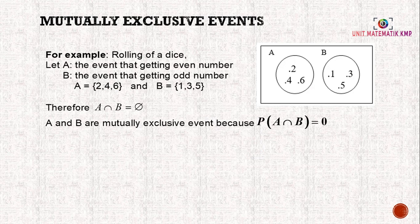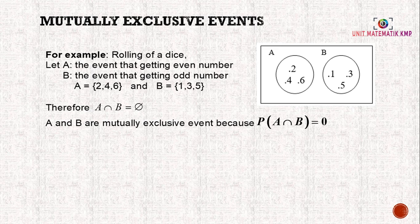Mutually exclusive event example. When you're rolling a dice, let A be the event of getting an even number and B is the event of getting an odd number. We can see from this Venn diagram, event A is 2, 4, 6 and B is 1, 3, 5.